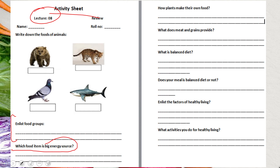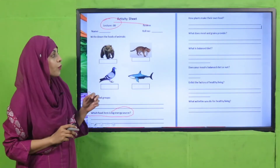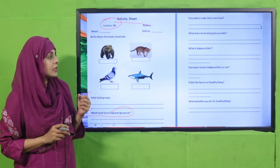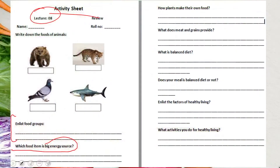Write down how plants make their own food and the procedure involved. Also write what meat and grains provide, explain what a balanced diet is and whether your own meal is balanced, and enlist the factors of healthy living.